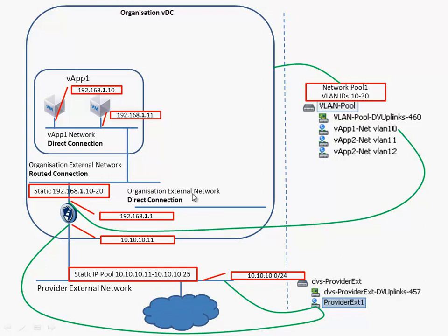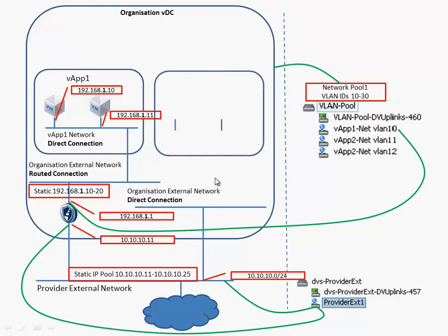When we are going to create an organization network with a direct connection to the provider external network, we also don't need a vShield Edge device. We are going to deploy a second vApp. The second vApp contains two virtual machines and both are connected to a routed connection from within the vApp.